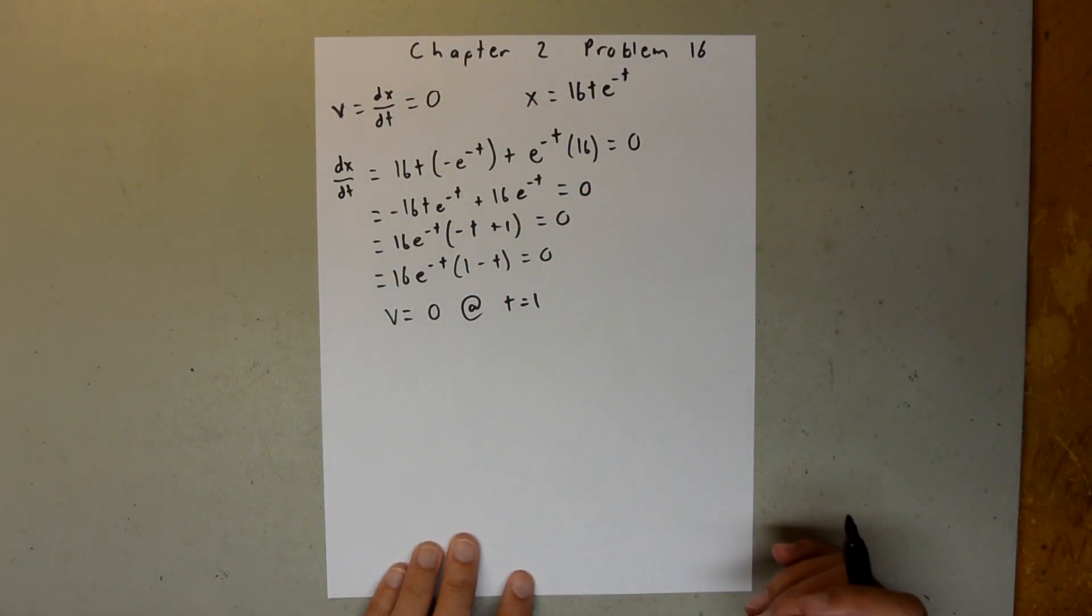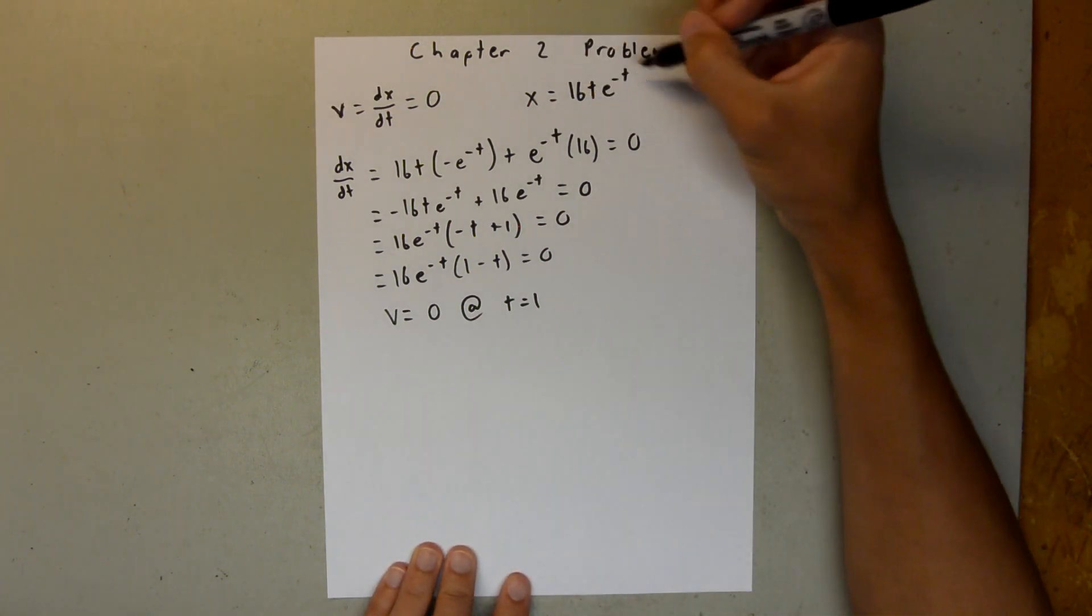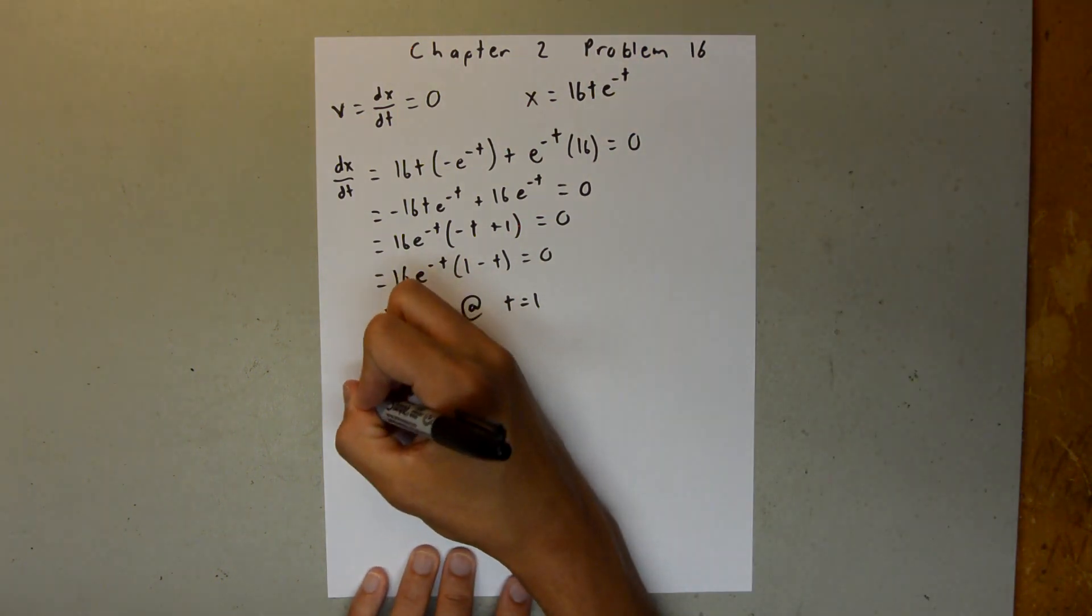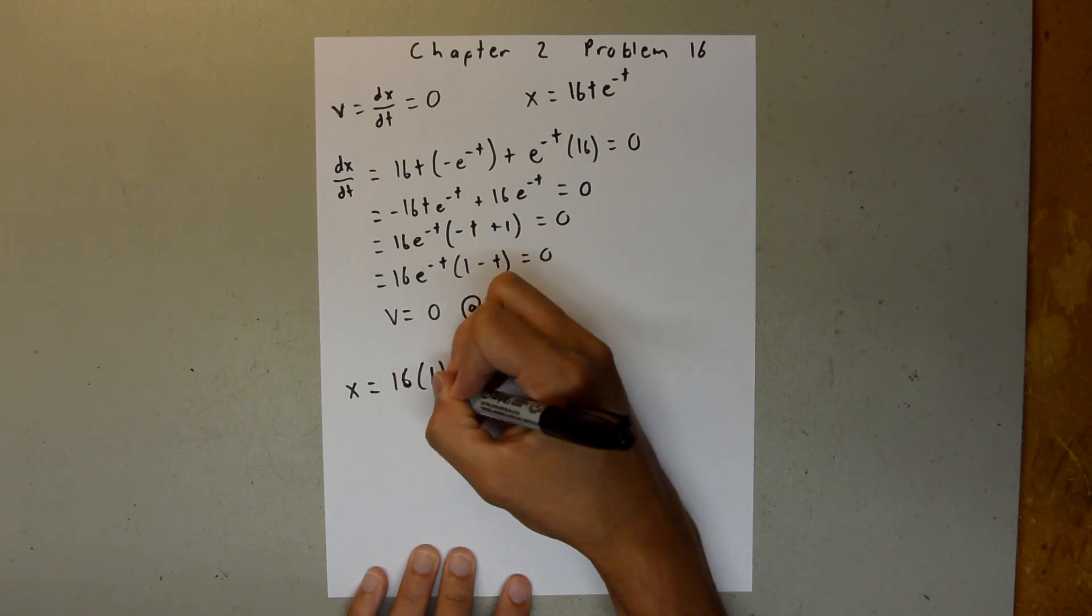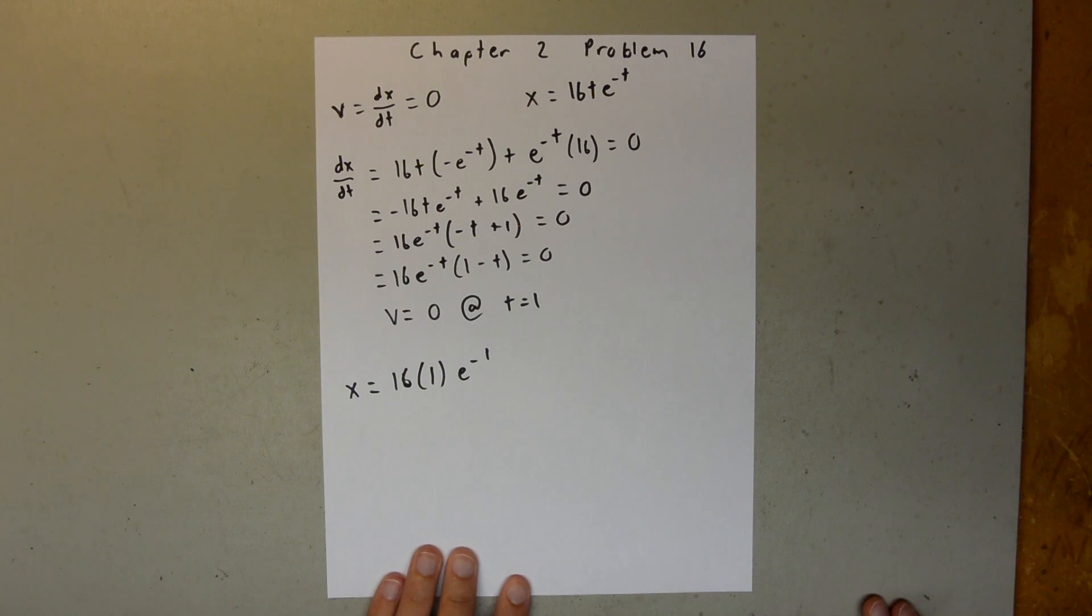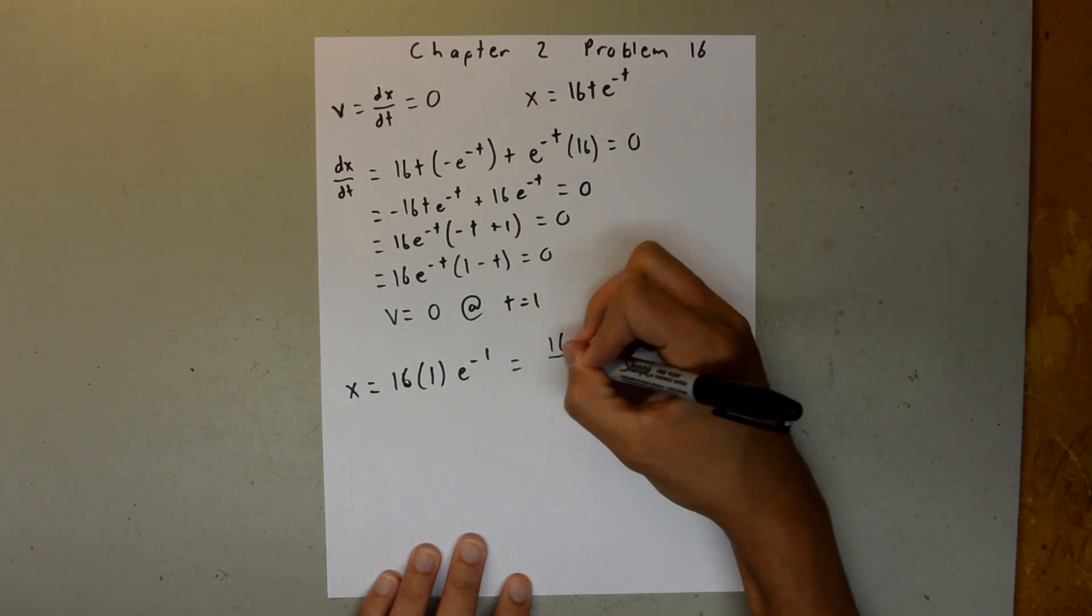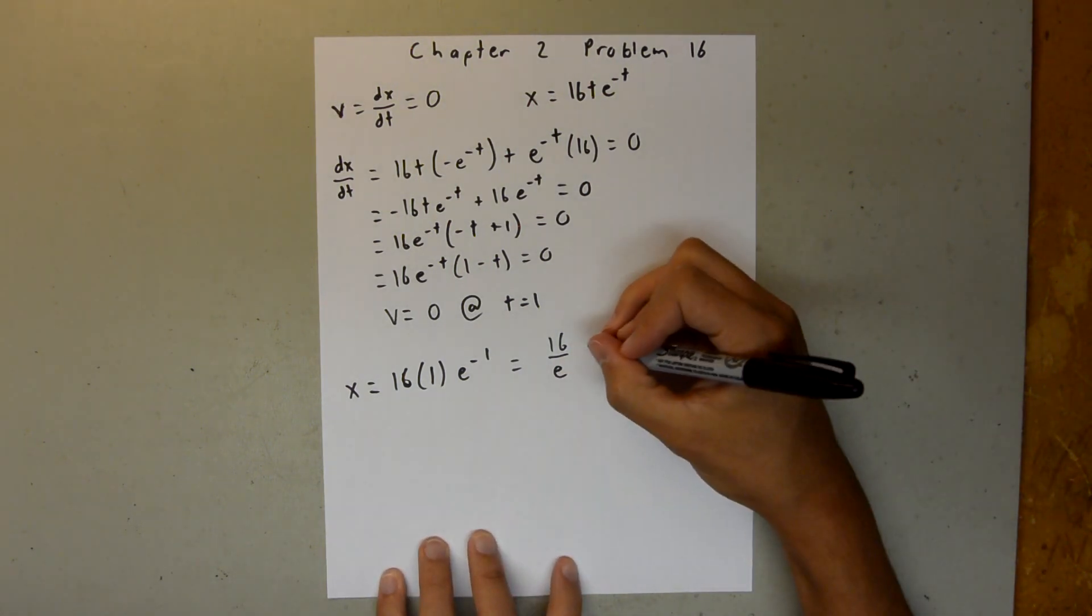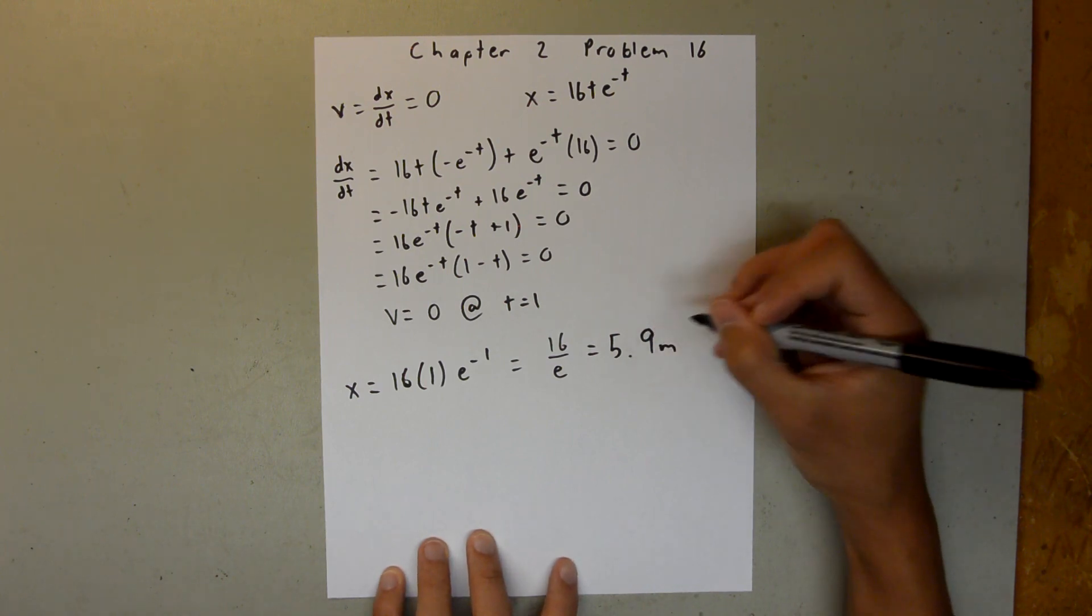We're asked to find how far from the origin this particle is at t equals 1, and this is our position equation. So we just plug 1 into there, so we can say x is equal to 16 times 1e to the negative 1. And if we rewrite this, we can rewrite this as 16 over e, and when you plug that into your calculator, you should get 5.9 meters from the origin.